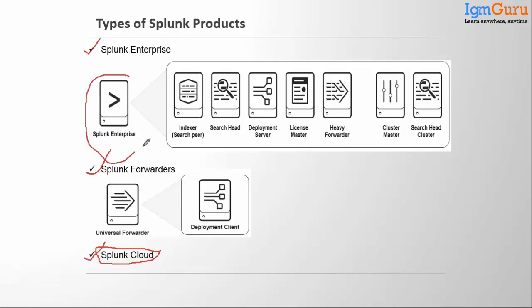This is Splunk Enterprise. For the initial couple of lectures we're going to work on Splunk Enterprise, then eventually move to Splunk Forwarders toward the end of the classes. In Splunk Enterprise we have the indexer, search head, deployment server, license master, heavy forwarder, cluster master, and search head cluster — these are the different components.